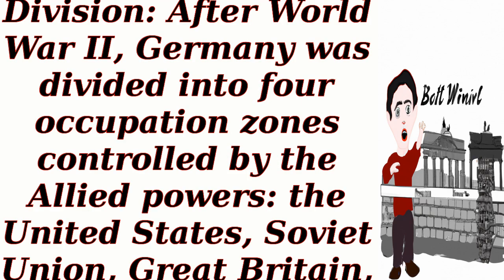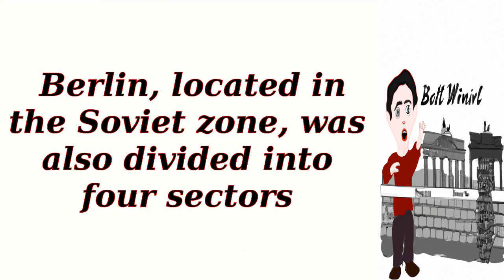Post-World War II division: After World War II, Germany was divided into four occupation zones controlled by the Allied powers — the United States, Soviet Union, Great Britain, and France. Berlin, located in the Soviet zone, was also divided into four sectors.